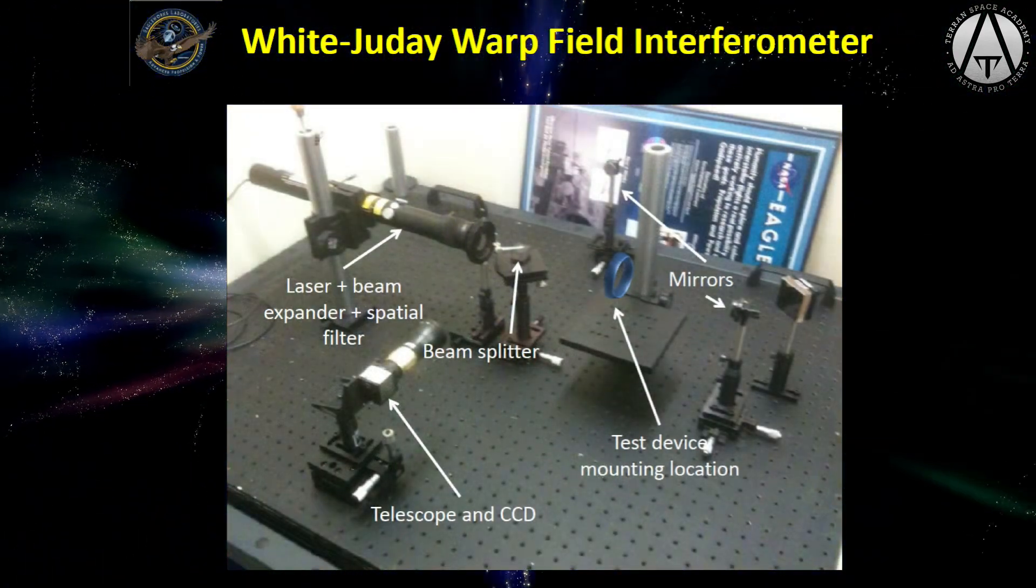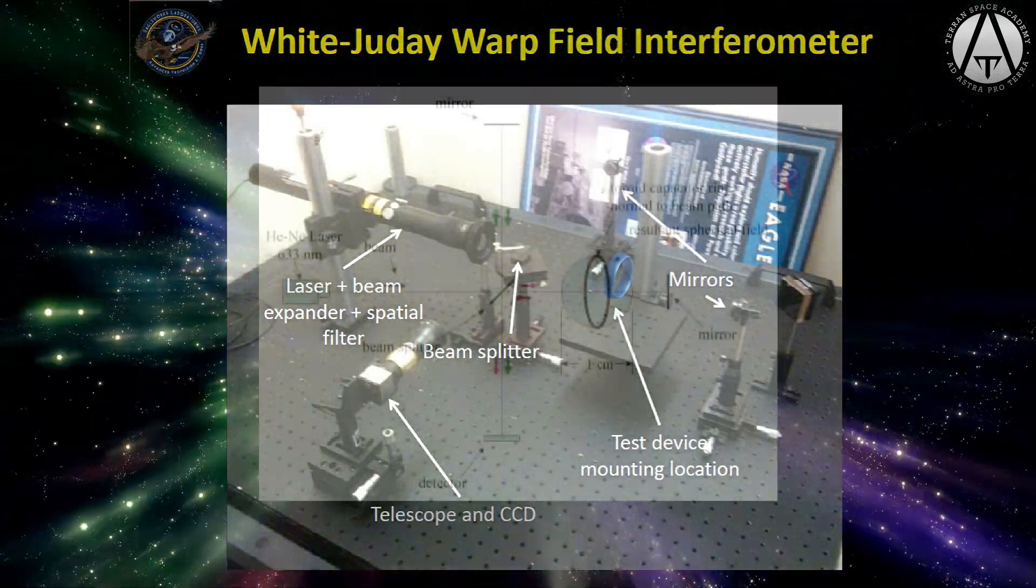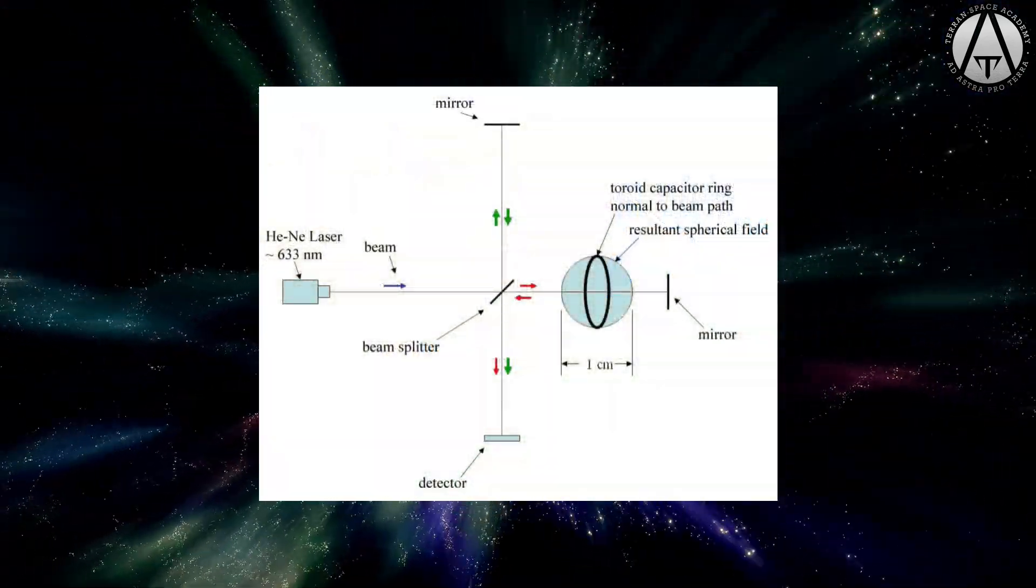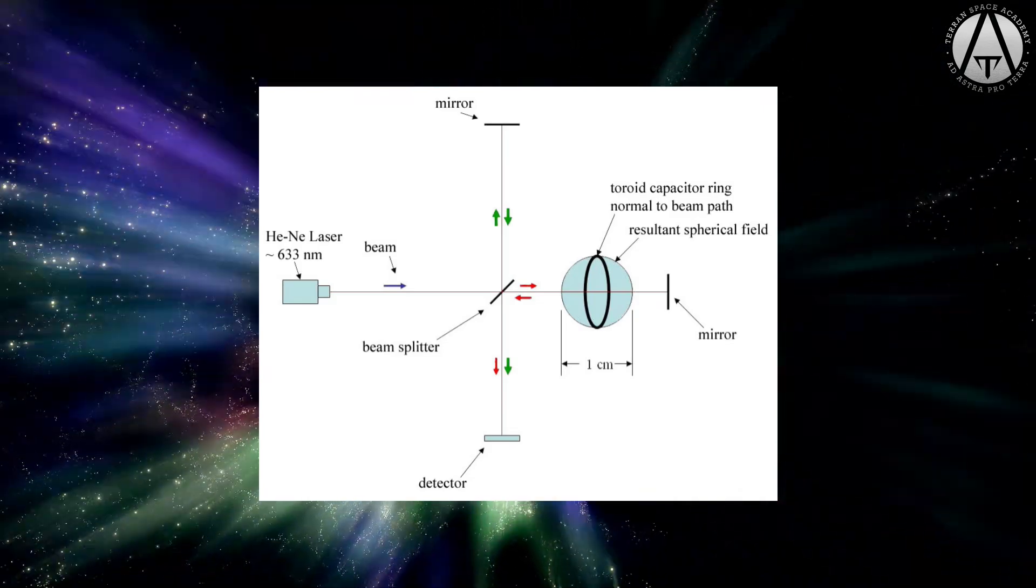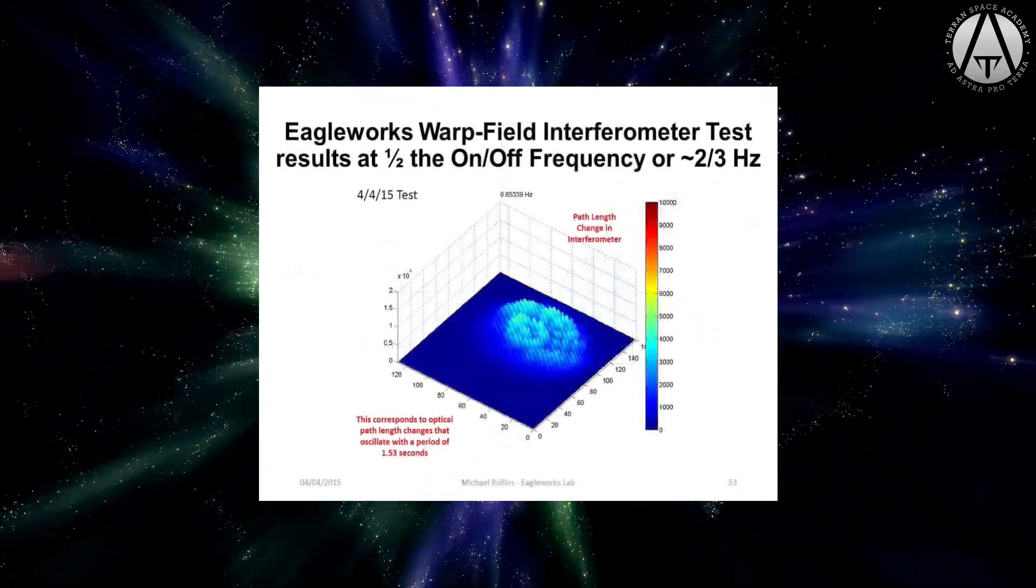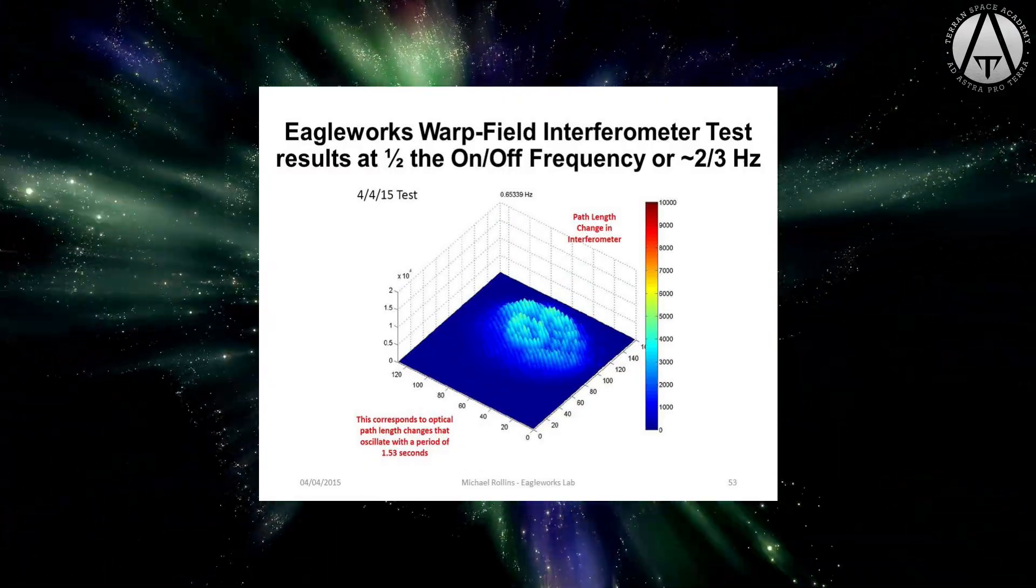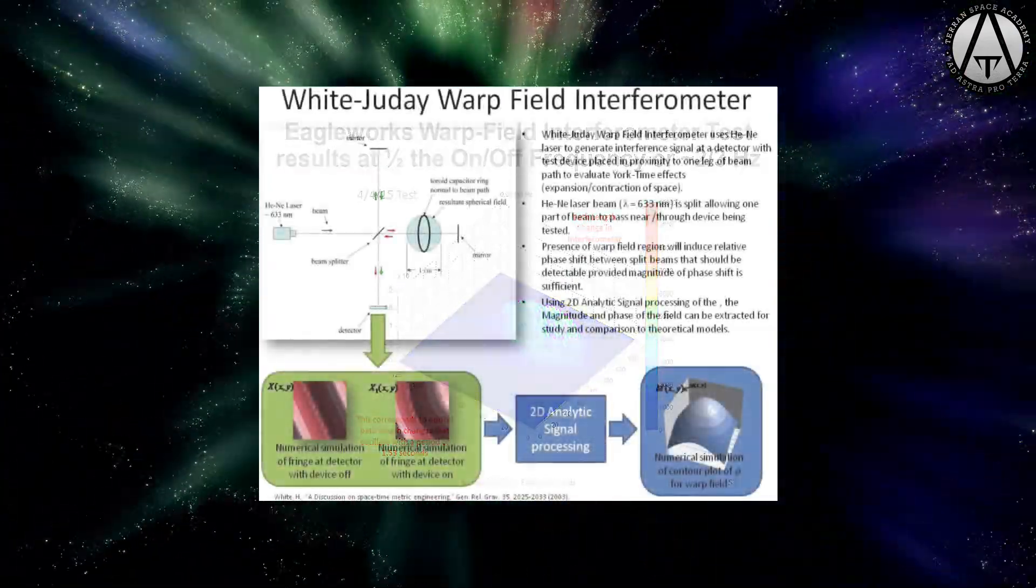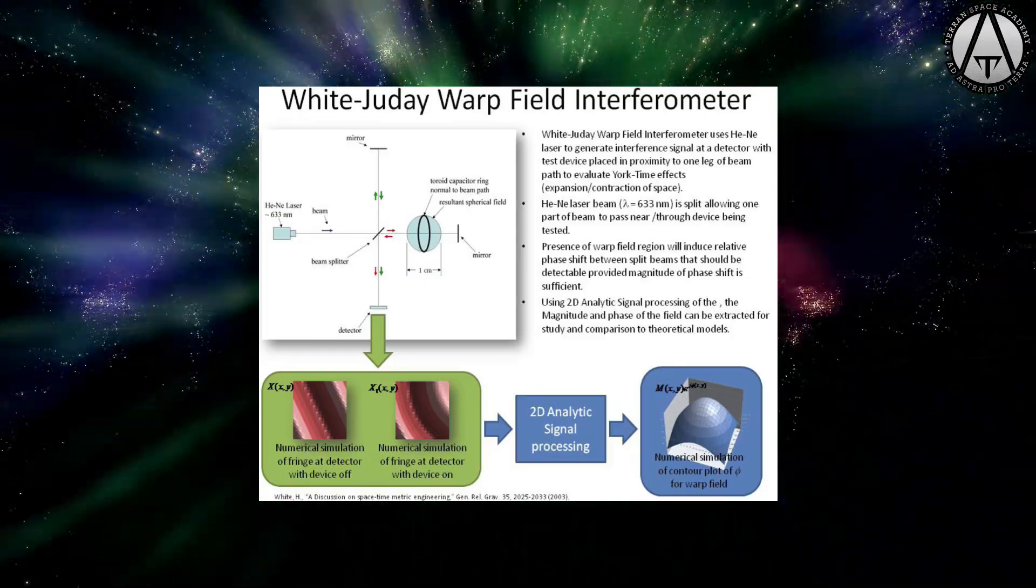He has described a test instrument called a warp drive interferometer to look for space-time distortions created by their test device. An interferometer divides laser light into two streams, then recombines them to cancel each other out. If there is a distortion of space-time, the beams will no longer cancel, and the change is detected by sensors. This means that real scientists at NASA are working on a warp drive.